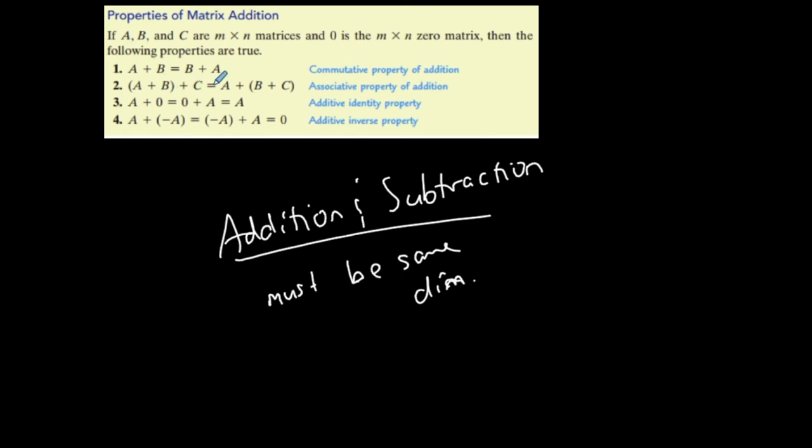Associative property of addition, right? I can pretty much add in any order that I want with matrices because it's the same thing in terms of regular numbers. Obviously, A plus the zero matrix is A, it spits back A, and then obviously A plus its additive inverse will give me zero. So if I have a matrix A and I add to it a matrix A with all of the additive inverses, then obviously I'll get a zero matrix.